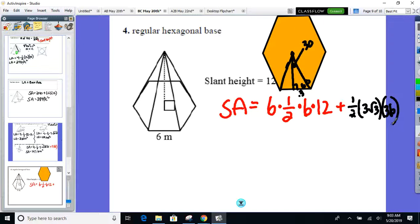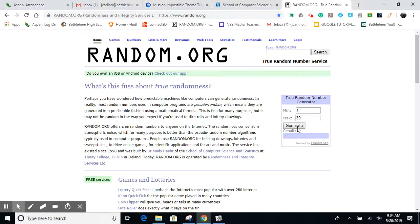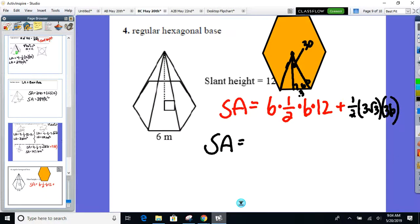Everyone all right there? Lateral area. Those are the six triangular faces. And then one half AP is the area of the base, which is a hexagon. Same directions as number three, nearest tenth. Surface area. Everyone all good there? Because that's where I'm done today.